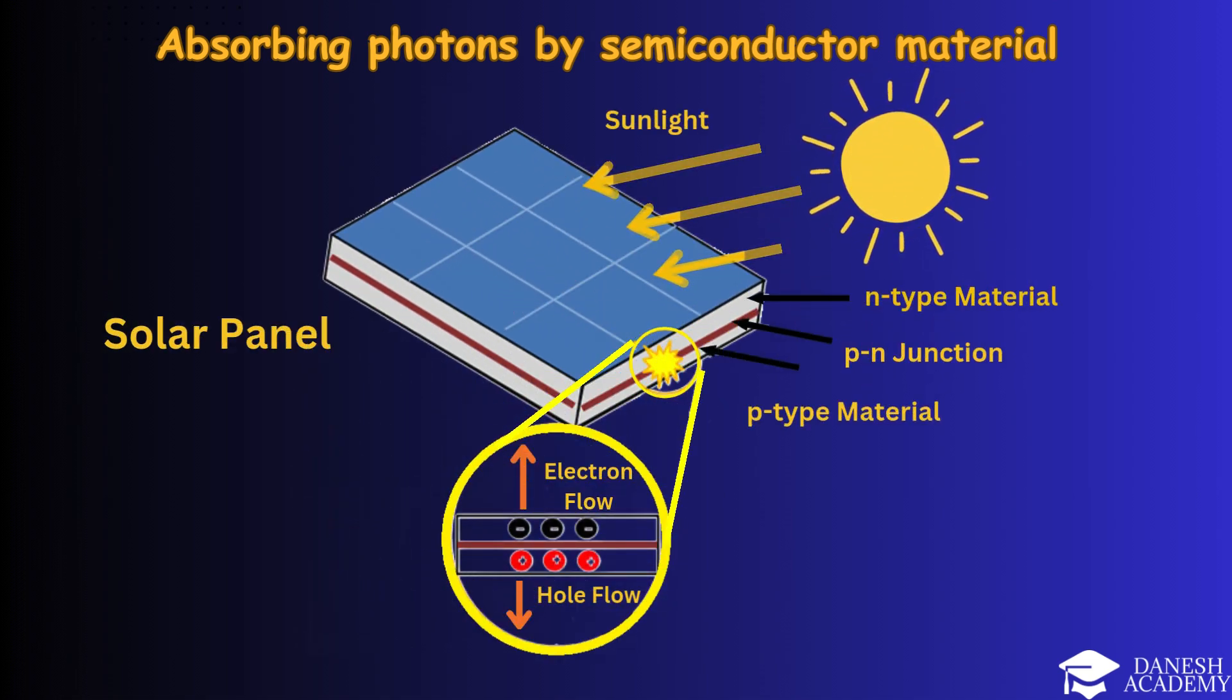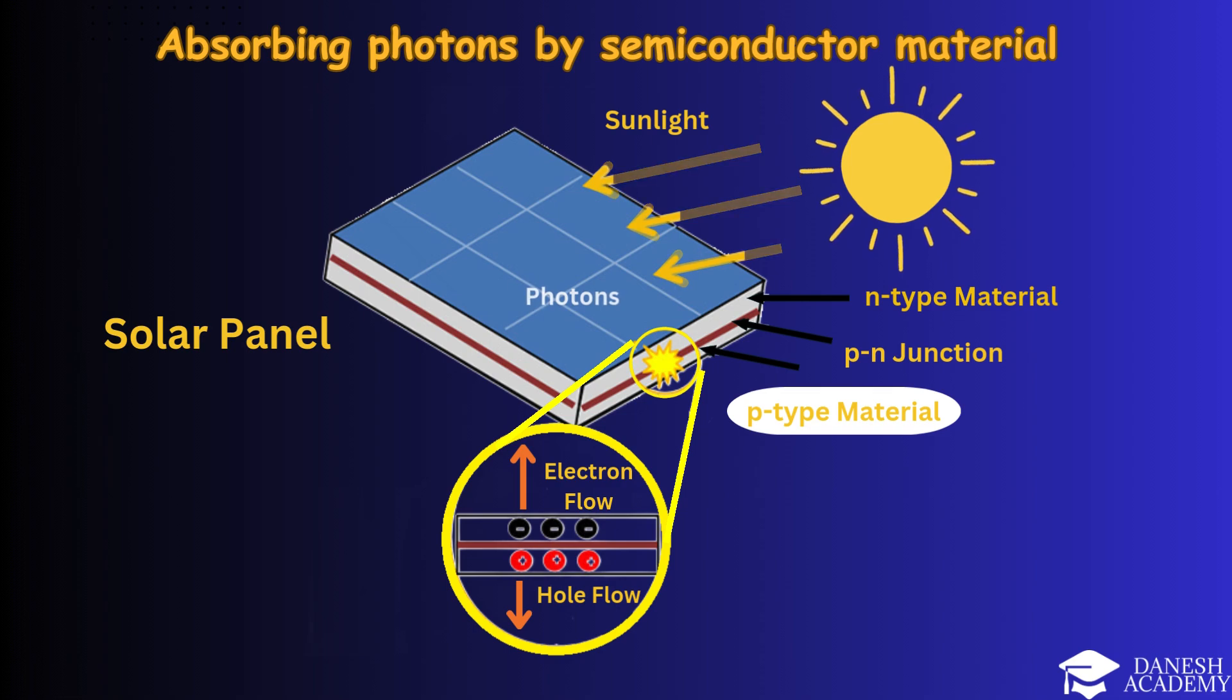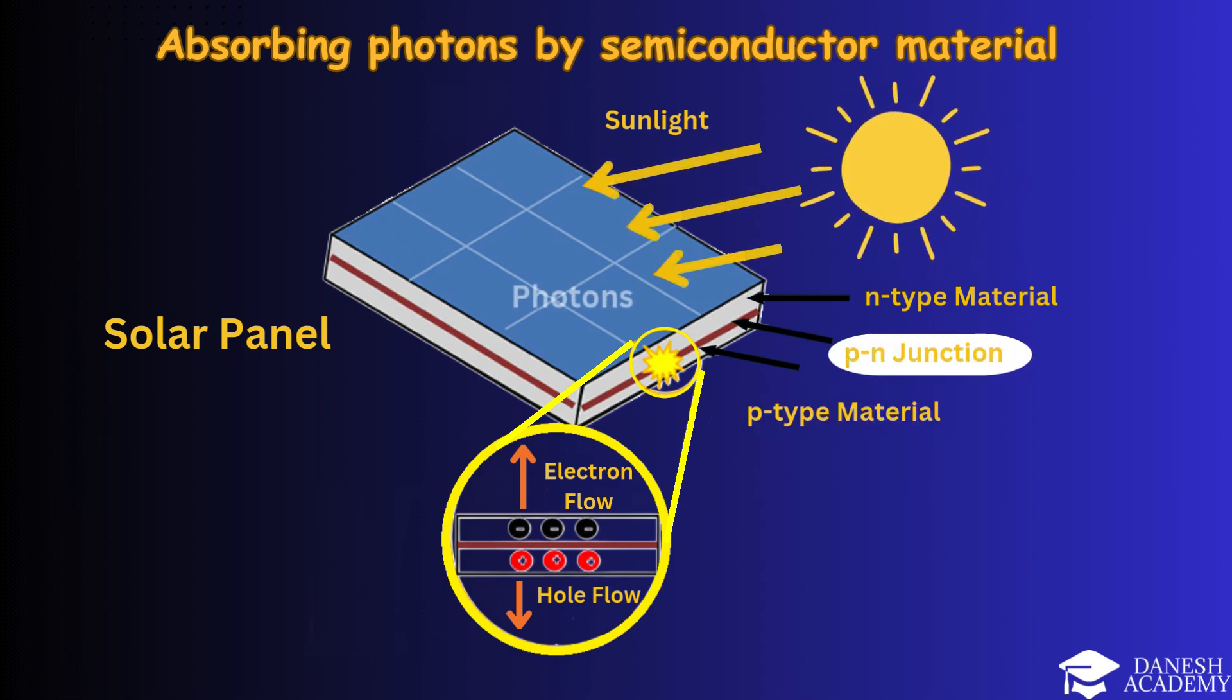Semiconductor layers: The N-type layer contains extra electrons, negative charge carriers. The P-type layer contains holes, positive charge carriers. At their boundary, the P-N junction forms an electric field.